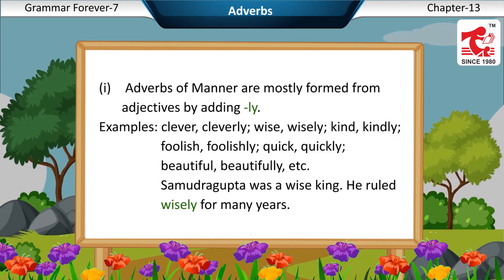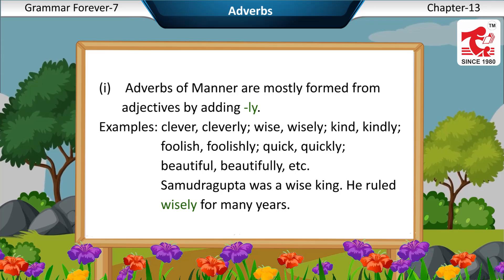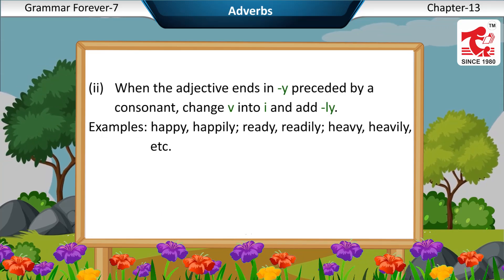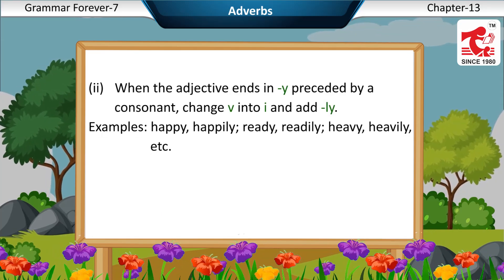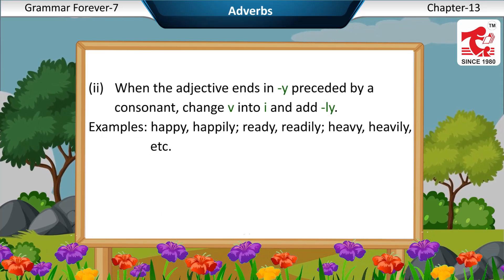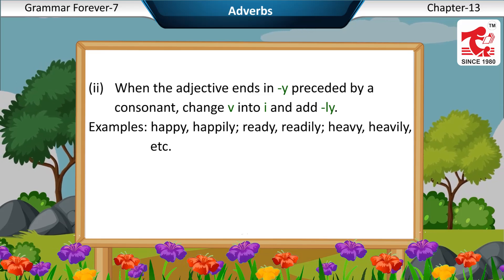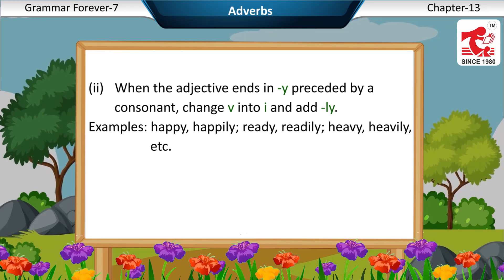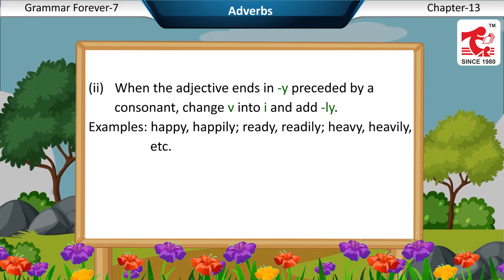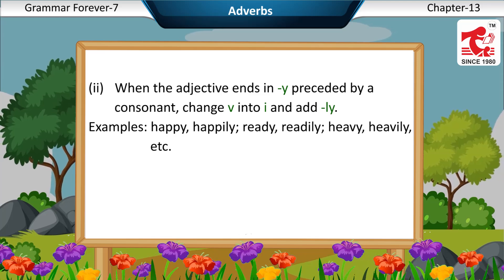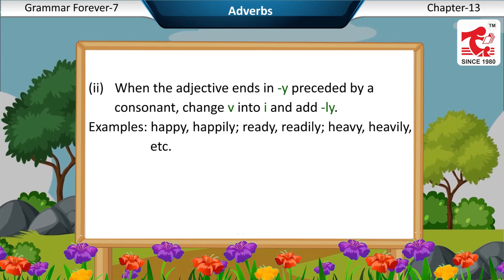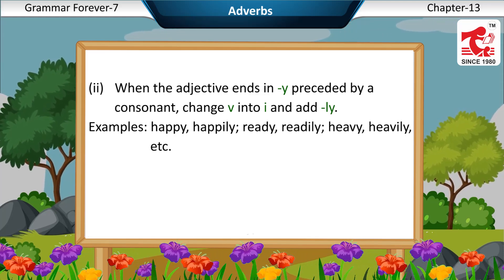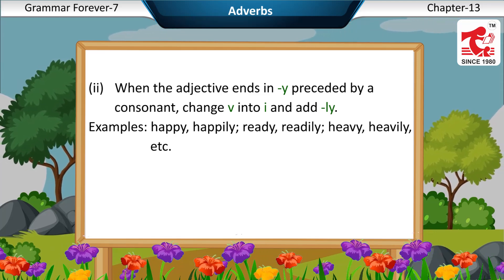Samundra Gupta was a wise king. He ruled wisely for many years. Second, when the adjective ends in Y preceded by a consonant, change Y into I and add -LY. Examples: happy — happily; ready — readily; heavy — heavily, etc.